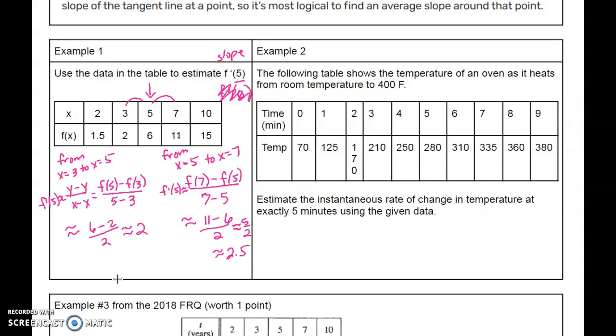When we have two different things, we can say that f'(5) is between 2 and 2.5, and I would leave my answer like that. On multiple choice, they might say 2.3 or 2.25. Some books tell you to average it, but as long as we have a value between 2 and 2.5, it's a good estimate. That's why it's an estimate - not the exact slope.